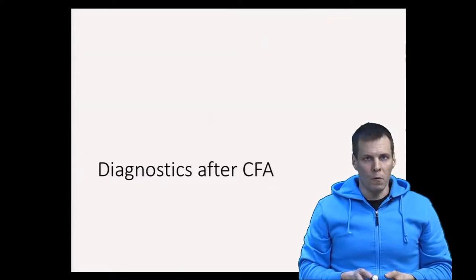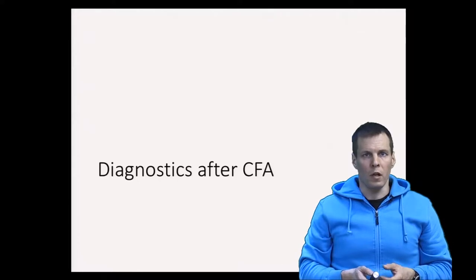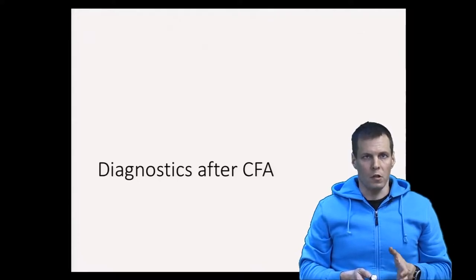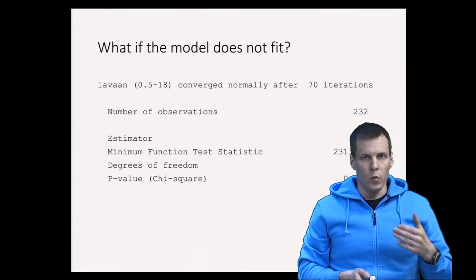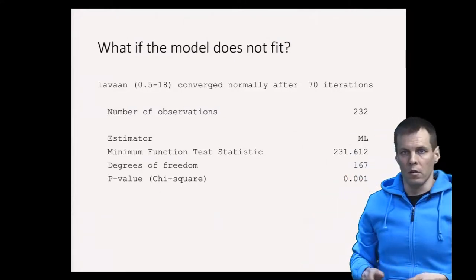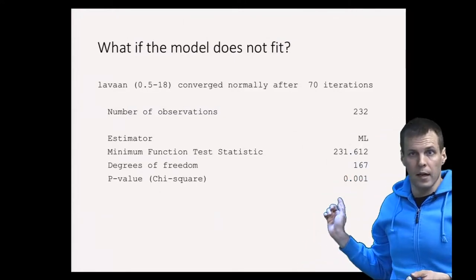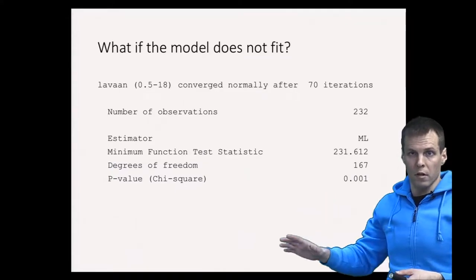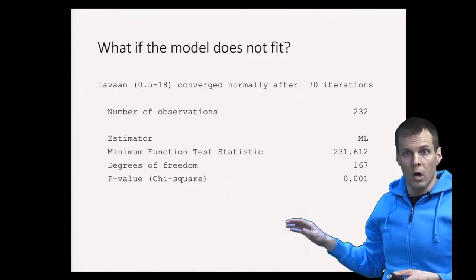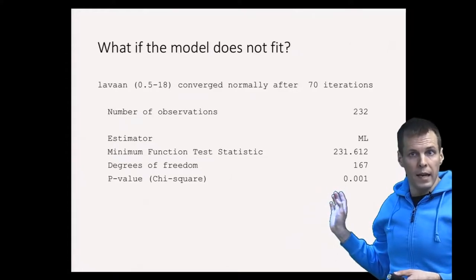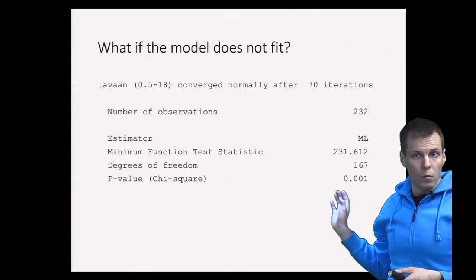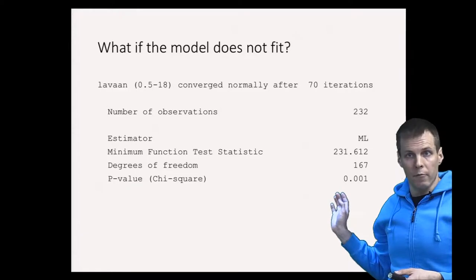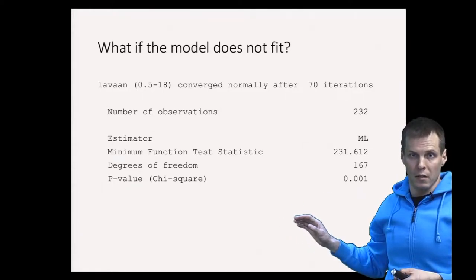In confirmatory factor analysis, the most important diagnostic information is the chi-square statistic. When you have a chi-square that is significant, it indicates that the model did not reproduce the empirical correlation matrix completely. It means that the model doesn't really explain every part of the data well enough that the residuals can be attributed to chance only.